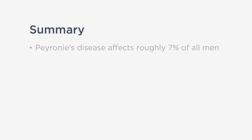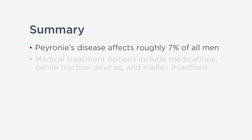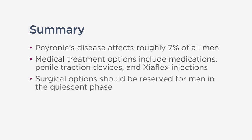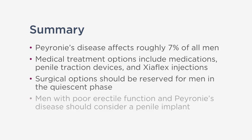In summary, Peyronie's disease affects roughly 7% of all men. Medical treatment options include medications, penile traction devices, and Xiaflex injections. Surgical options should be reserved for men in the quiescent phase, and men with poor erectile function and Peyronie's disease should be considered for a penile implant. Thank you for your attention, and I hope you enjoyed this video.